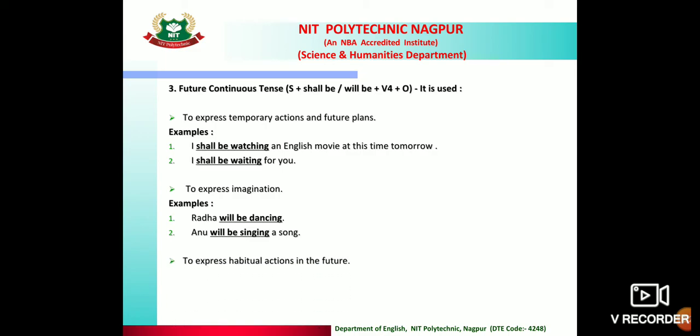Usage 3: to express habitual or predictable actions in the future — things that are expected to happen. For example: 'Winter will be coming again' — winter will come again. 'Children will be growing into adults' — children will grow up. Future continuous tense is used to express things that are going to happen.